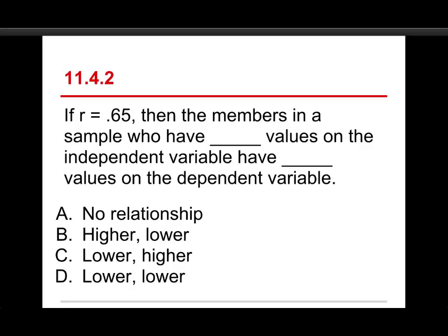Well, .65 is a positive correlation and so the choices are no relationship, higher and lower, lower and higher, and lower and lower. Well, positive associations you usually think of them as high goes with high, but it also means that low goes with low and so D is the correct answer.